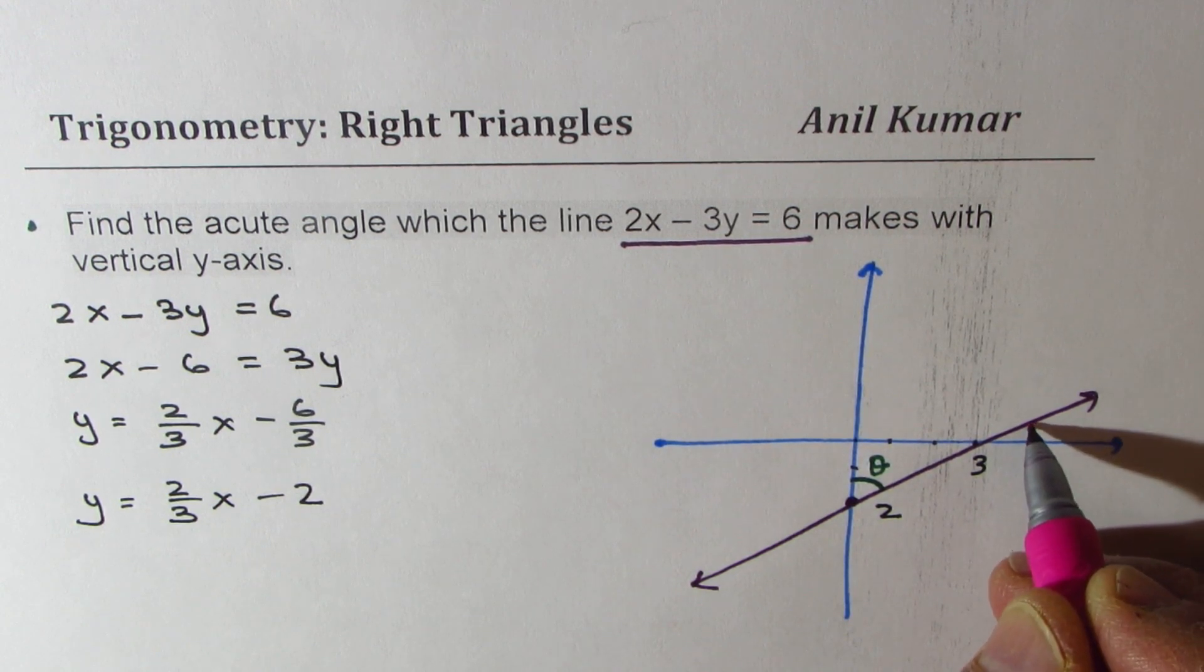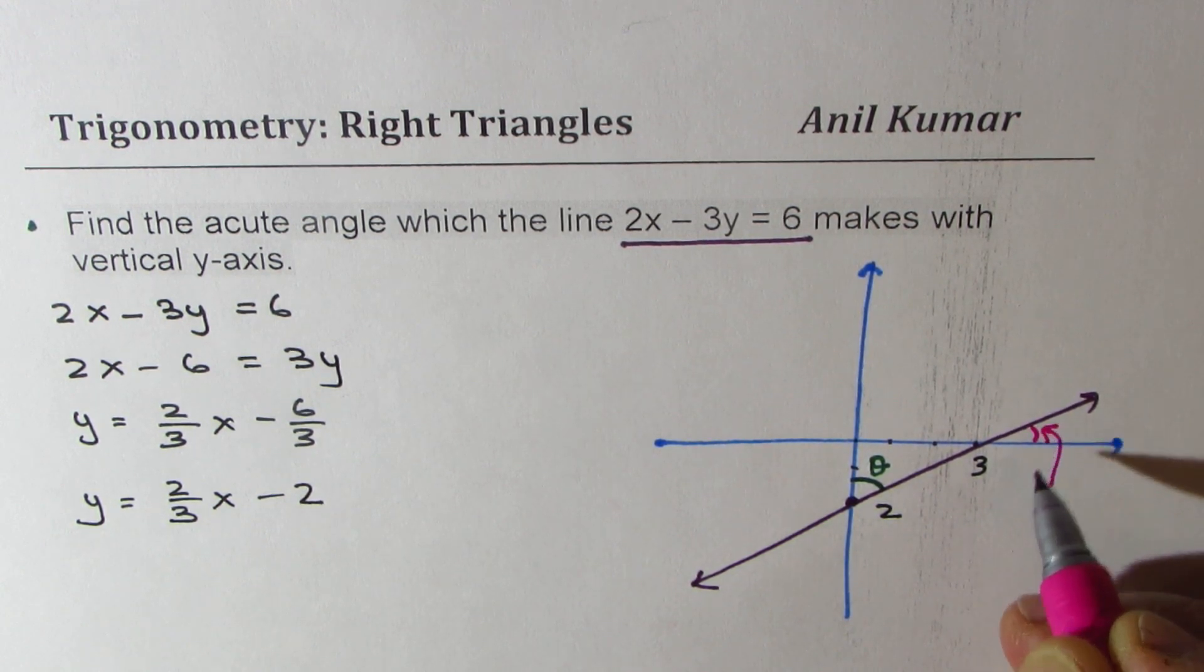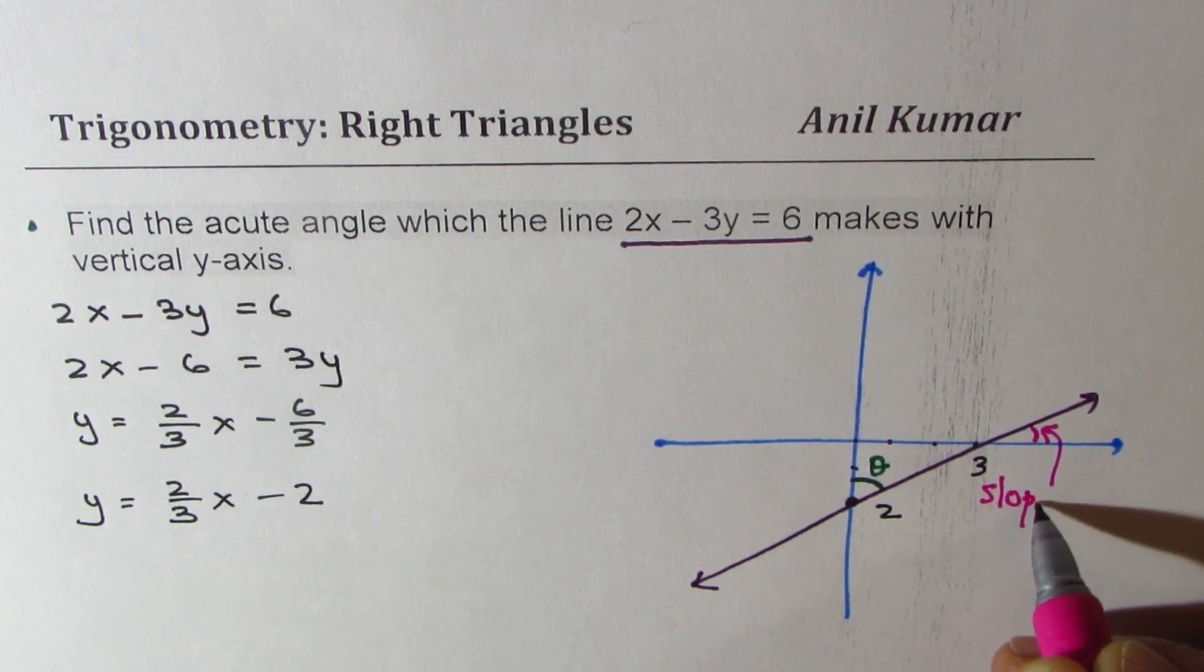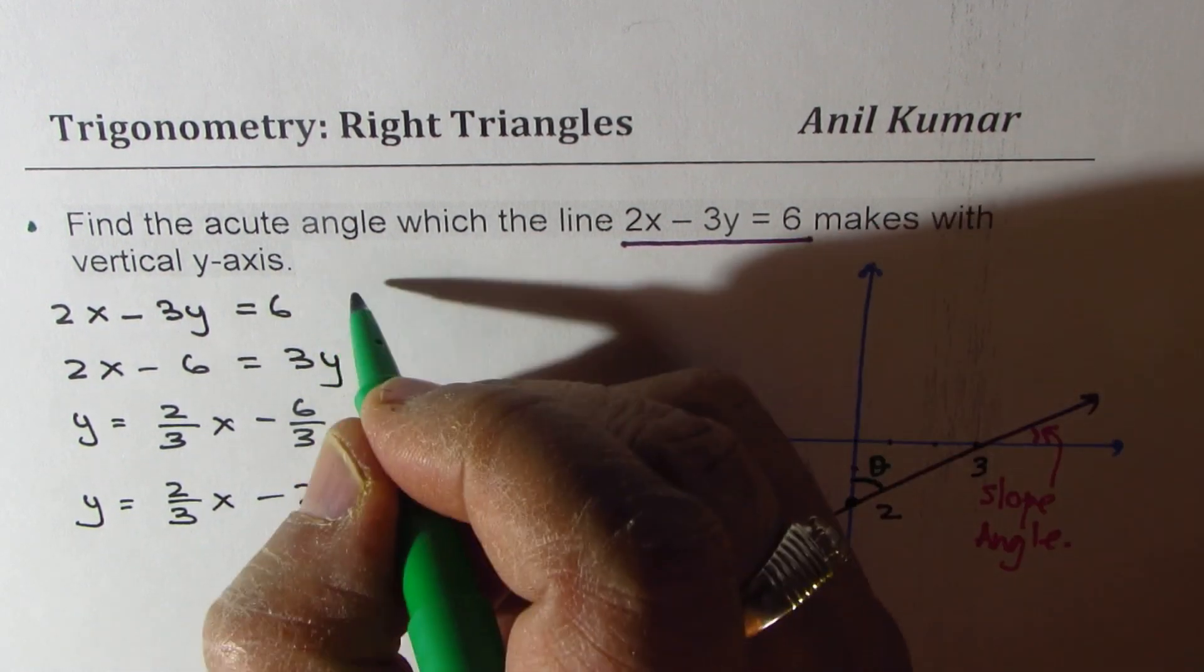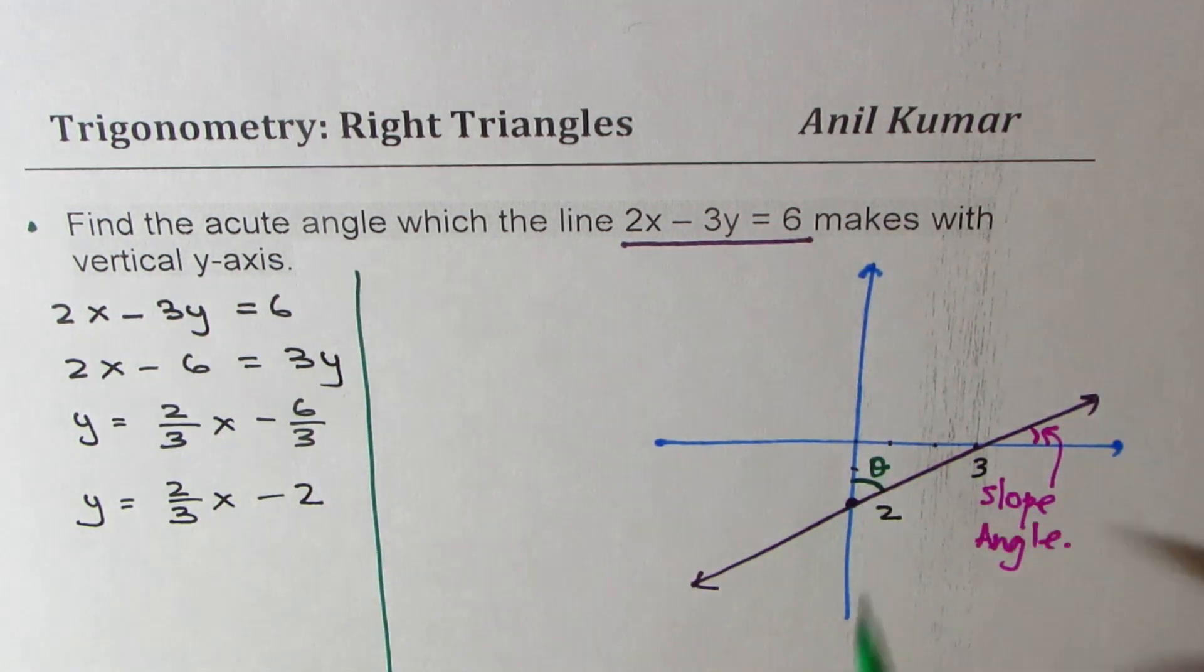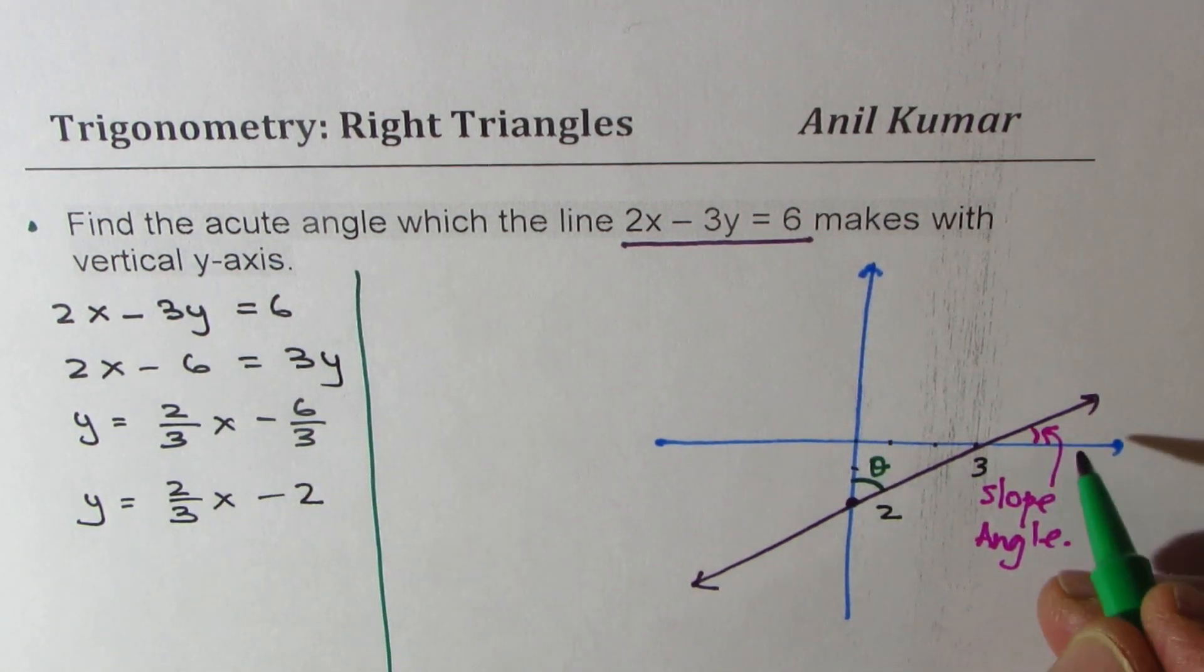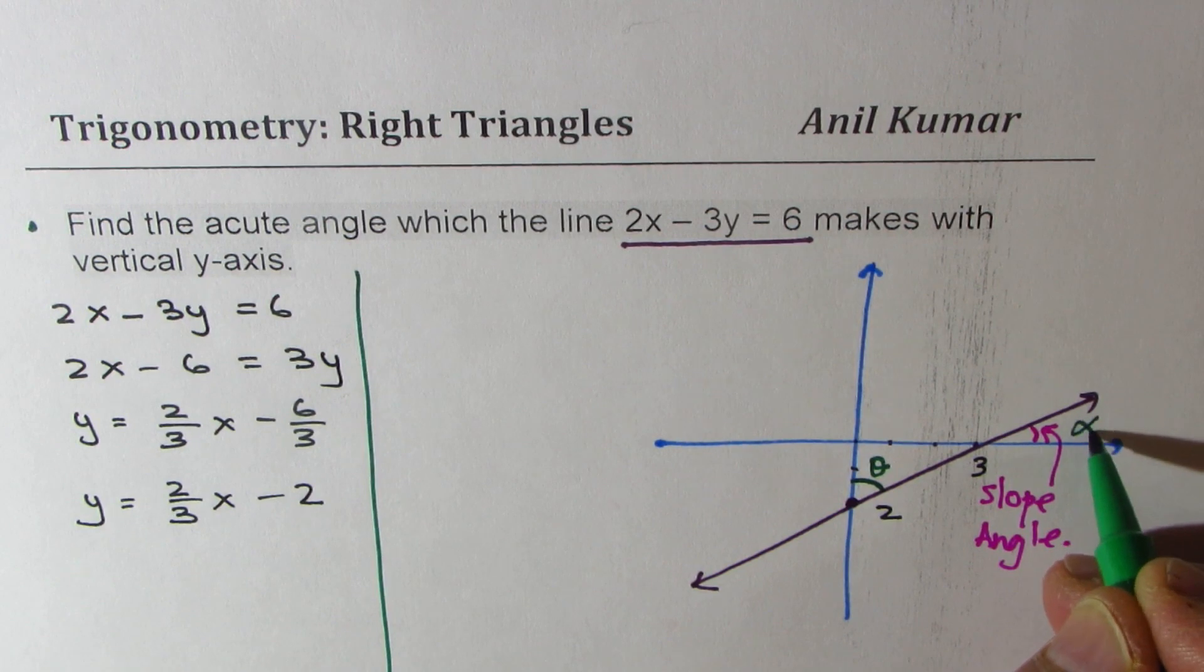Now we know this is called the slope angle. So we'll first find the slope angle and then find the angle theta. So let's call this slope angle as alpha.